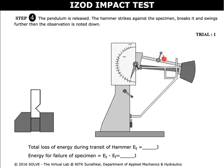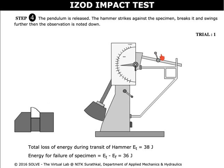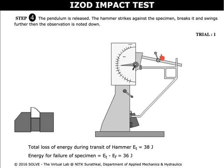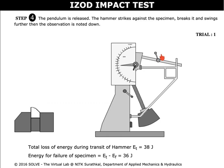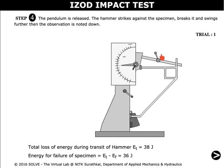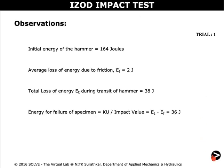Now release the pendulum and the hammer strikes the test specimen and breaks it. The total loss of energy during transit of the hammer and energy for failure of specimen can be found. This is the observation for the current trial.